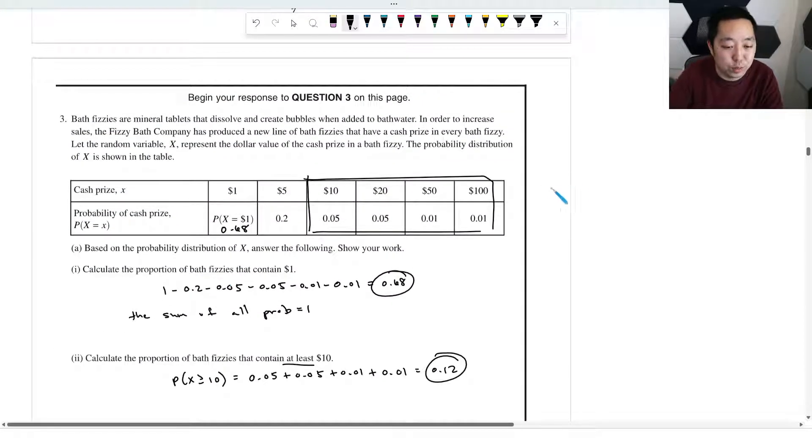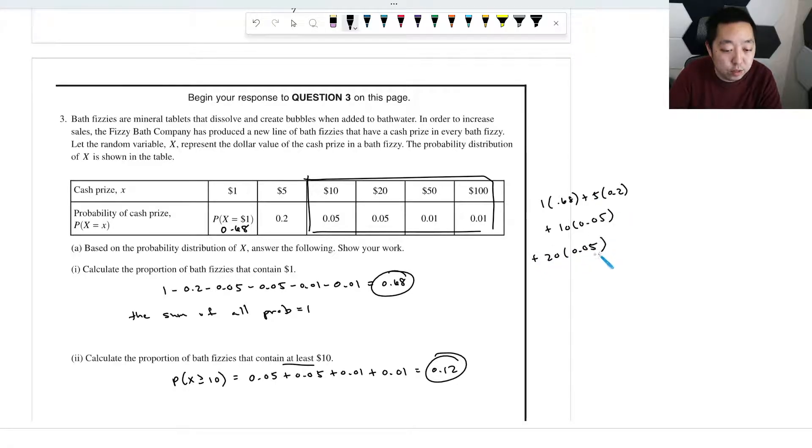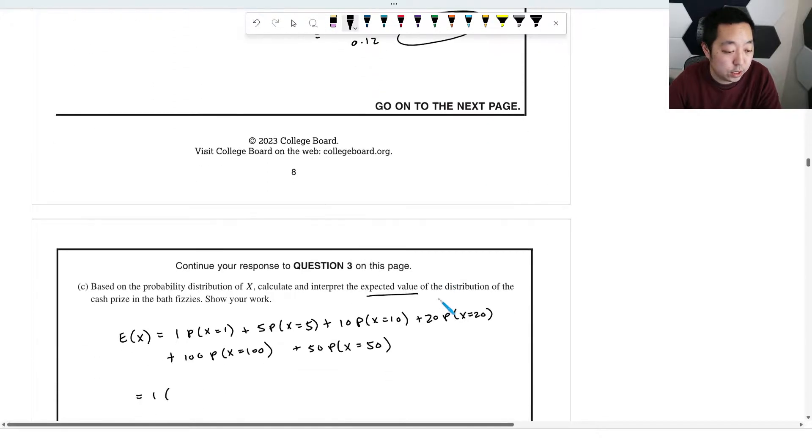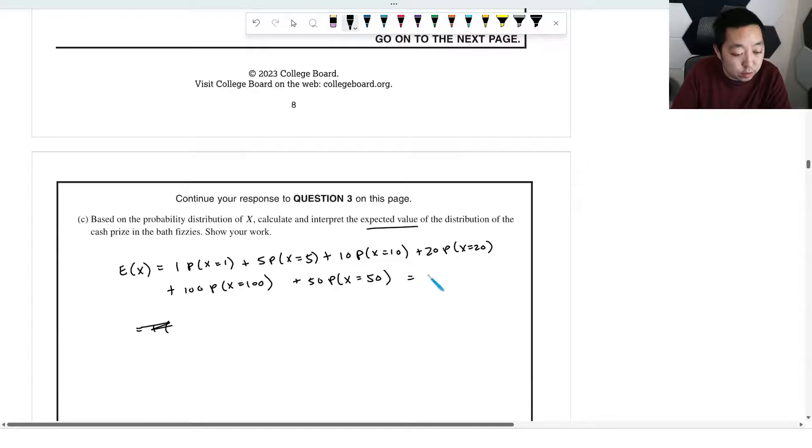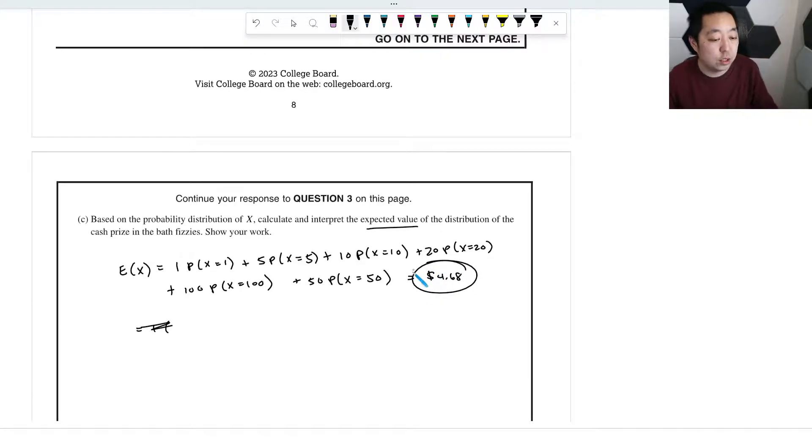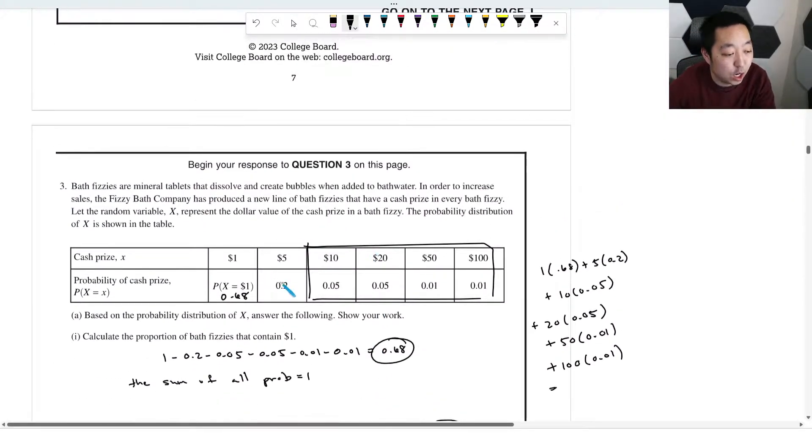So let's just multiply those out. One times 0.68 plus five times 0.2 plus 10 times 0.05 plus 20 times 0.05 plus 50 times 0.01 plus 100 times 0.01. So we're just going to use our calculator for that. Always double check as you're entering it in, really easy to mess these things up. That's probably $4.68, that sounds about right. Don't forget the units. You are measuring dollars, so it's the expected value of x. x is the number of dollars.